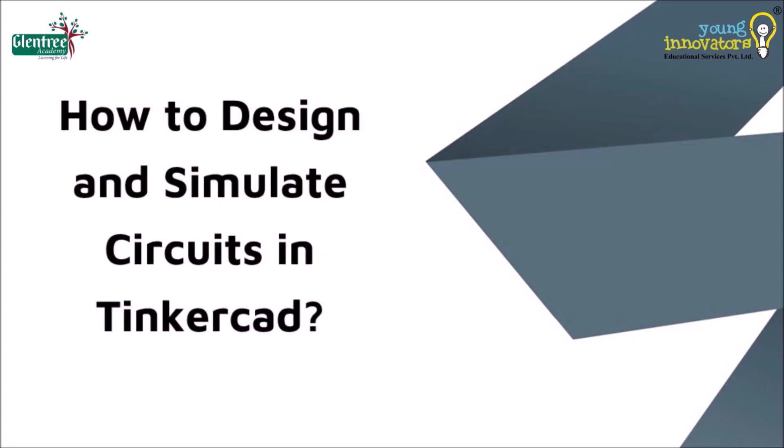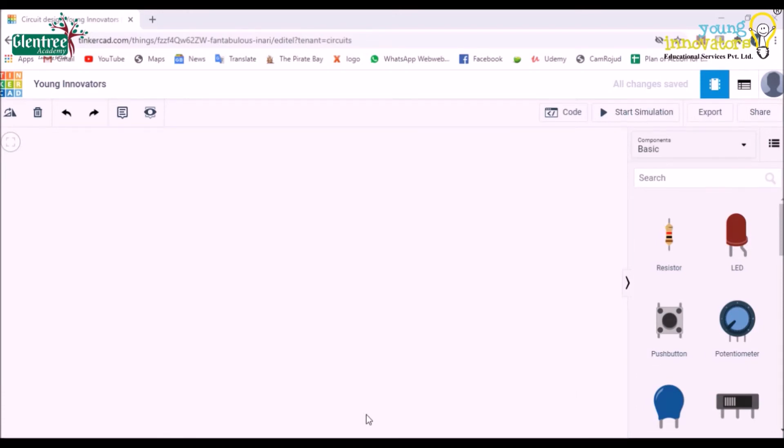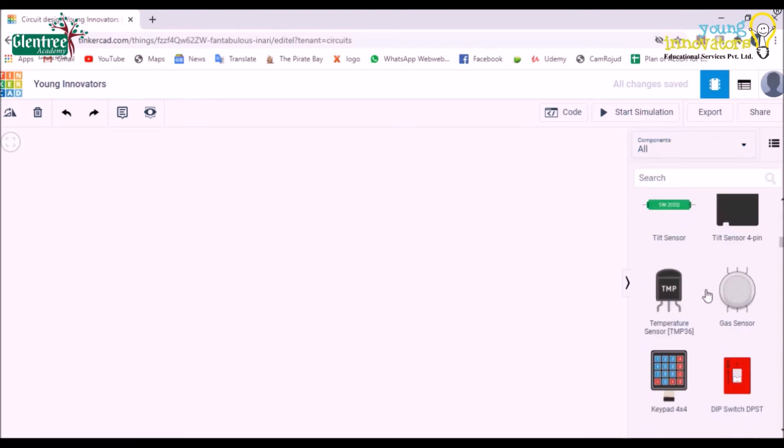Now let's learn how to design and simulate a circuit in Tinkercad. Let me choose a few components and design simple circuits. Let's start circuiting: choose a bulb and place it horizontally or vertically on the worksheet as shown.